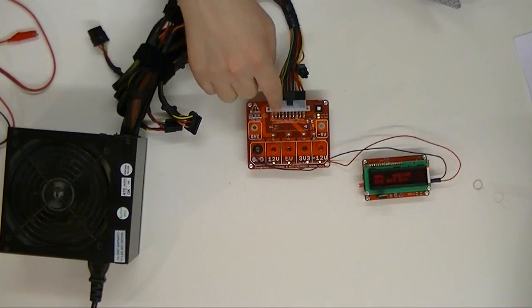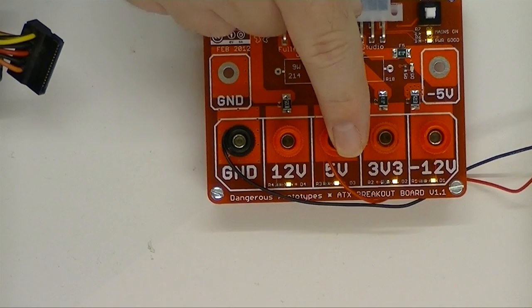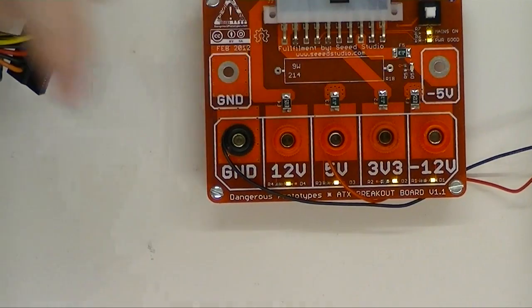And you connect it to the ATX breakout board and it gives you a nice bench power supply with a hefty 12 volt, 5 volt, 3.3 volt, and negative 12 volt power rail.